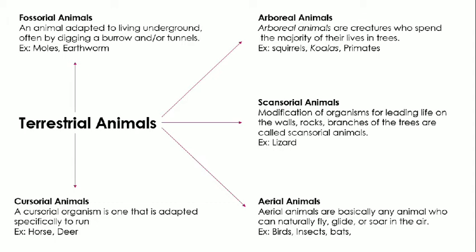Arboreal animals are those which spend most of their lives living on trees — for example, squirrels, koalas, and primates like monkeys. Scansorial animals are modified to climb on trees and are mostly found attached on rocks or branches — for example, lizards. Aerial animals are those adapted for flight or gliding in the air — for example, birds, insects, and bats. Aerial animals are also arboreal because they build their nests in trees.